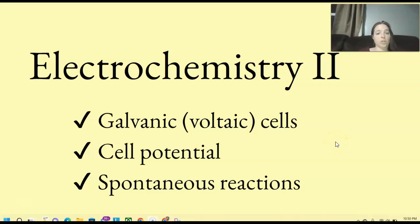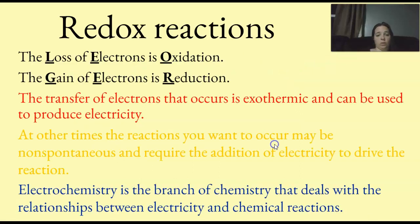All right, so we're going to start electrochemistry 2, redox 2. We're going to start looking at galvanic or voltaic cells. We're not going to look at cell potential or spontaneous reactions, just really the galvanic voltaic cells. So there is part of your books that we're not going to get to.